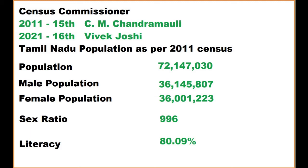Now we will look at Tamil Nadu's population as per the 2011 census. The total population is 7 crore 21,47,030. The male population is 3 crore 61,45,807 and the female population was 3 crore 60,01,223. The sex ratio was 996.